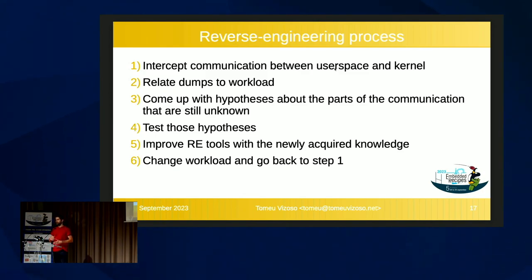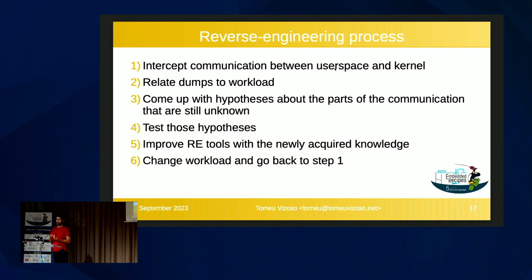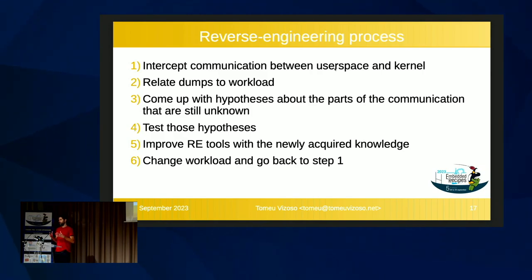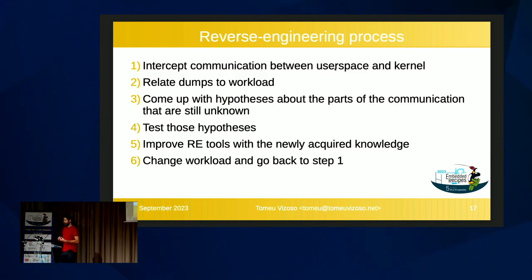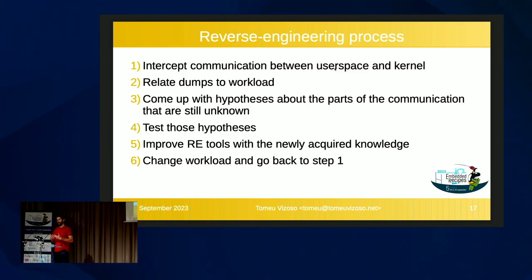That's all you know initially — you have just a piece of memory, and you know that it contains all the information that defines what user space wants the hardware to be doing. So you start changing parameters there and see which bits change. There will be a header probably. You really have to know about the workload, what characterizes what you are sending. Then you observe those changes and try to figure out how they relate. At the start, there's 100% uncertainty, so you need to start putting some order in that chaos. As more pieces of the puzzle are in place, the other ones become clear where they fit. It's that kind of work — the iterative work at the start is very slow, it's very hard, but eventually it gets better.